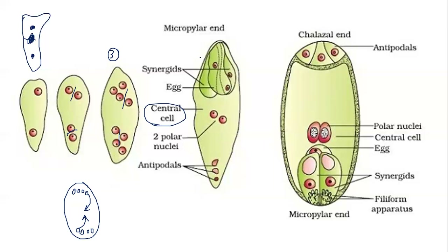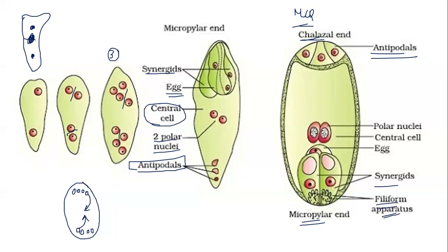The three cells towards the micropylar region form the egg apparatus — synergids on two sides with the egg in the middle. The two migrated nuclei form the polar nuclei in the center. The antipodal cells are present towards the chalazal region. In the micropylar region you have the filiform apparatus — hair-like structures present in the synergids that guide the entry of the pollen tube into the embryo sac, because the egg is the female gamete.